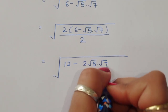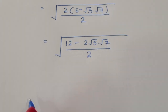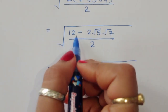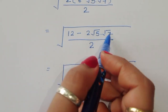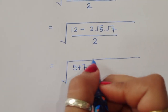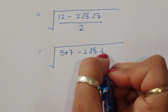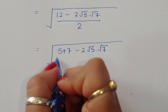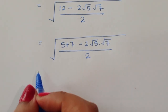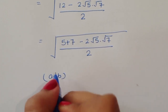Now, 12 can be written as 5 + 7, since 7 + 5 = 12. So we rewrite this as √[(5 + 7 - 2√5 × √7) / 2]. We know the formula: (a - b)² = a² + b² - 2ab.